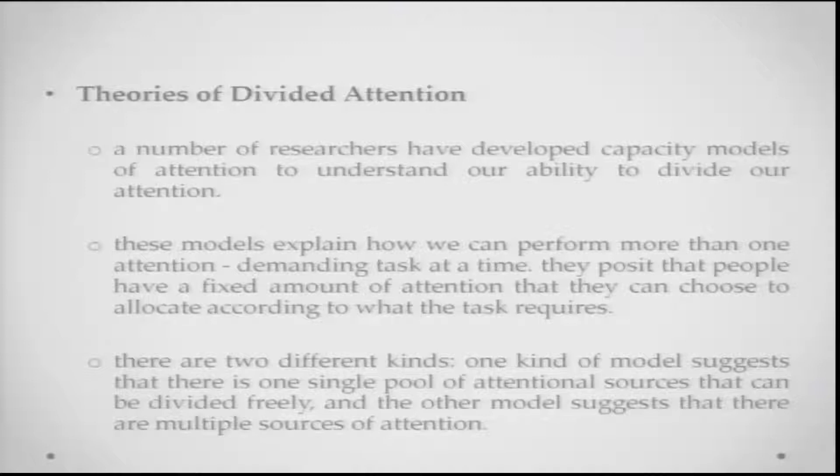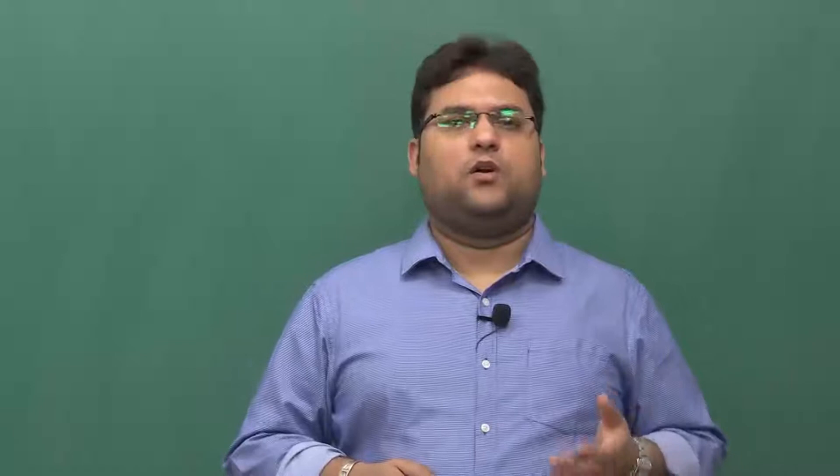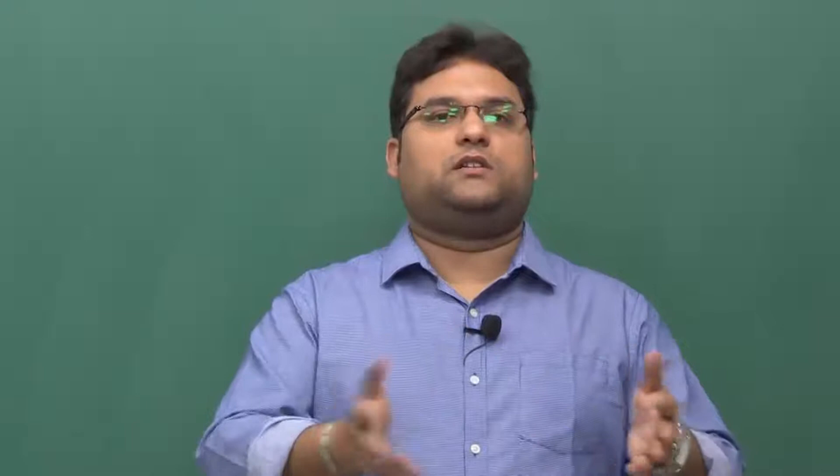Let us talk about theories of divided attention. A number of researchers have developed capacity models of attention to understand our ability to divide attention. The whole point of being able to divide attention is that you have a limited attentional capacity and you divide it between two tasks you are doing at the same time. These capacity models explain how we can perform more than one attention-demanding task simultaneously. They posit that people have a fixed amount of attention they can choose to allocate according to task requirements — easier tasks alongside difficult ones are slightly more manageable.